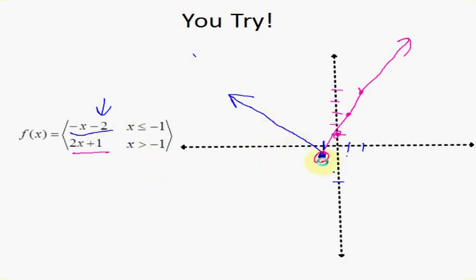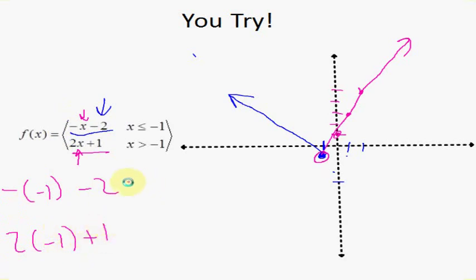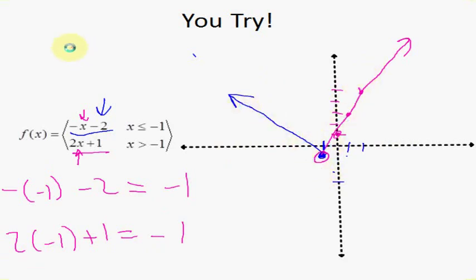To verify these functions touch at the same point, plug x = -1 into both. For the first: -(-1) - 2 = 1 - 2 = -1. For the second: 2(-1) + 1 = -2 + 1 = -1. Yes, they do touch each other — therefore it is a continuous function. For every x there is a y and there is no break. Even though these are two different functions, they connect at the same point. A piecewise function would not be continuous if there's a break.